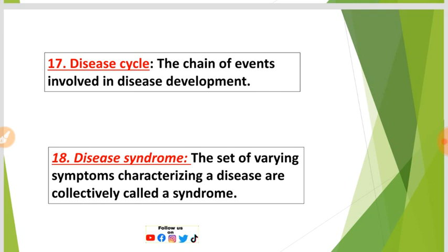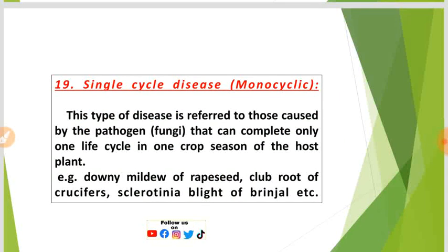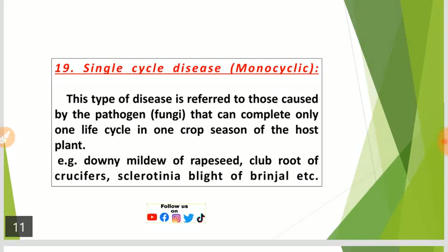Number eighteen: Disease syndrome — the set of varying symptoms characterizing a disease, collectively called a syndrome. Number nineteen: Single cycle disease (monocyclic) — this type of disease is caused by pathogens that can complete only one life cycle in one crop season of the host plant.